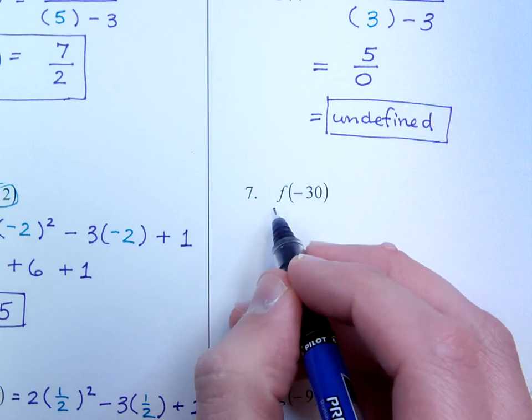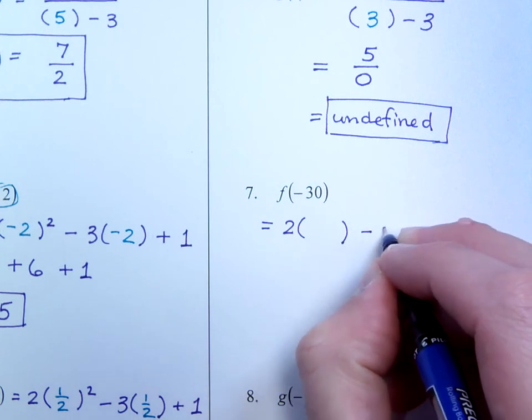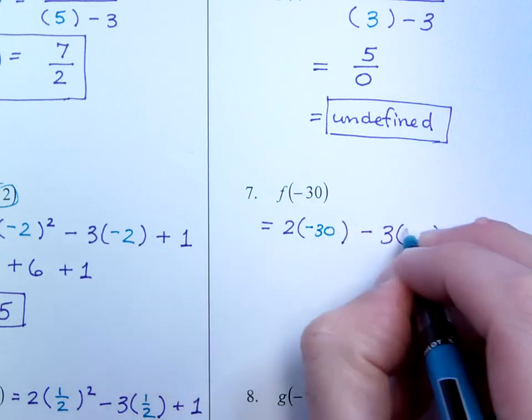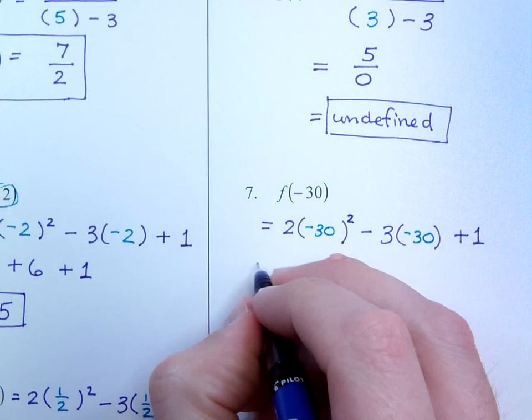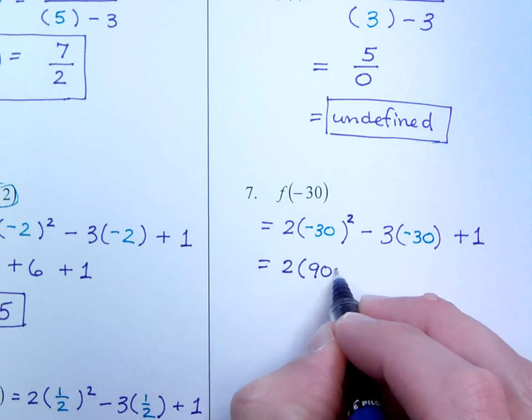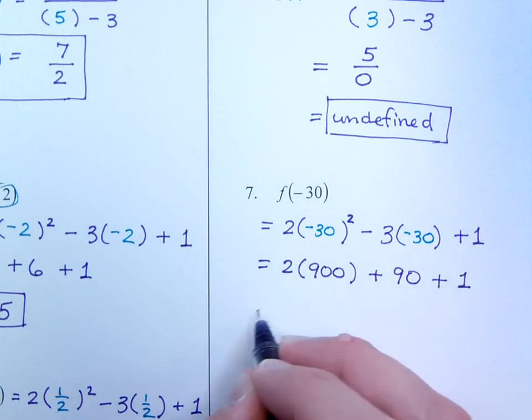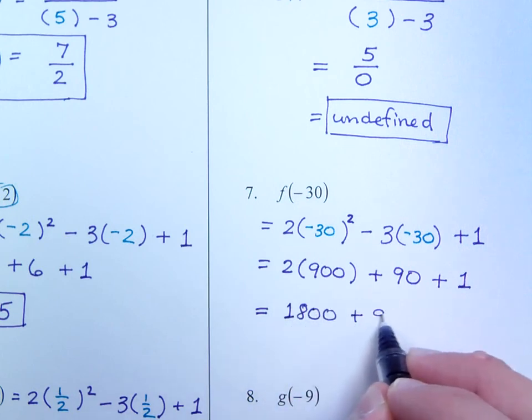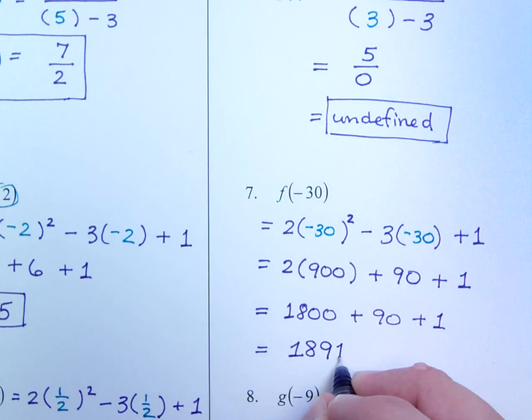Number 7. Now see it's switched back to f. So put those parenthesis in, because this was 2x squared minus 3x plus 1. And we're replacing all those x's with negative 30. Oh, forgot the square, that was going to be a problem. So here, negative 30 squared is positive 900. This right here gives me a positive 90, and then plus 1. So 2 times 900 is 1800, plus 90 plus 1. And all together that's 1891.